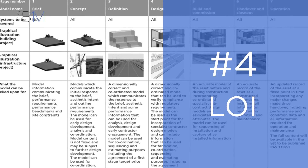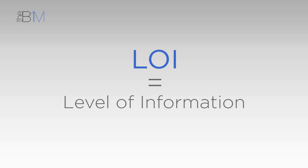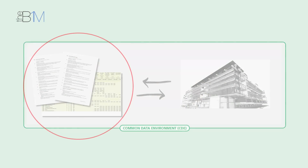At number four is LOI. LOI is Level of Information — the amount of non-graphical data within an information model at a given stage. It might be formed as schedules, specifications, or other 2D documentation.